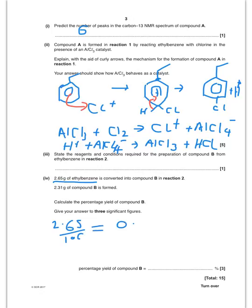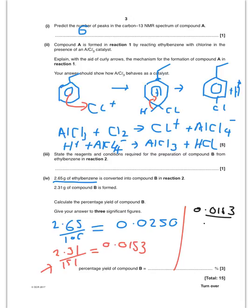And that comes to 0.0250. Then let's work out the moles of compound B, 2.31 divided by the molar mass of B, which is 151. That comes to 0.0153. It's a one-to-one reaction, so I expect to get 0.0250 moles of compound B. So my percentage yield is going to be 0.0153 divided by 0.0250 times by 100 to convert into percentage, and that gives me 61.2%.